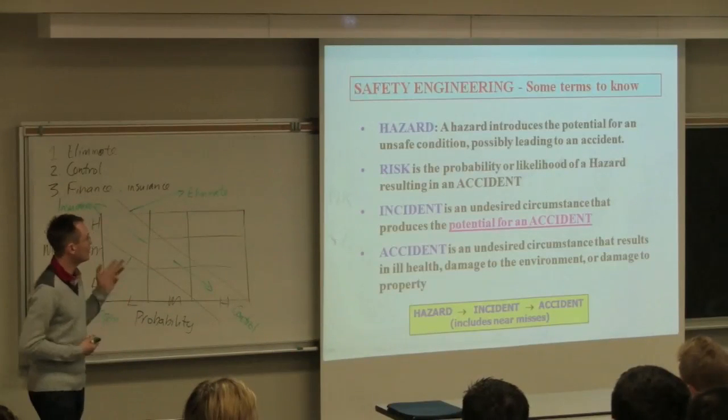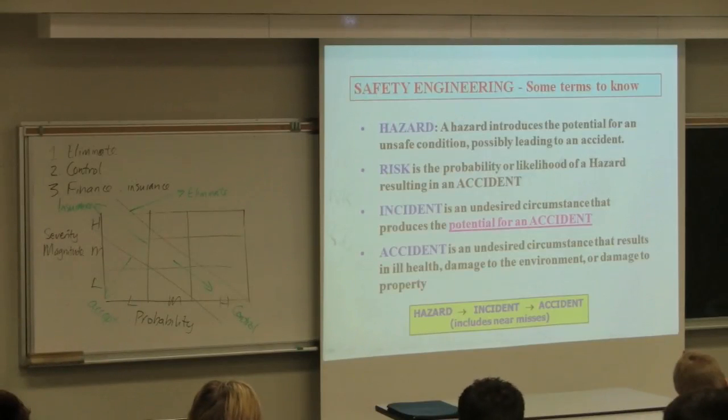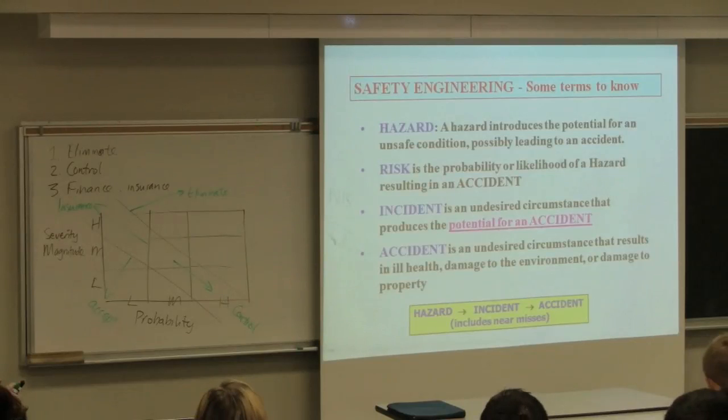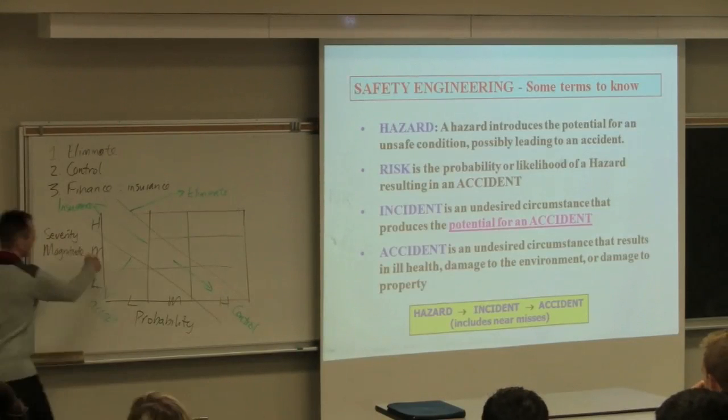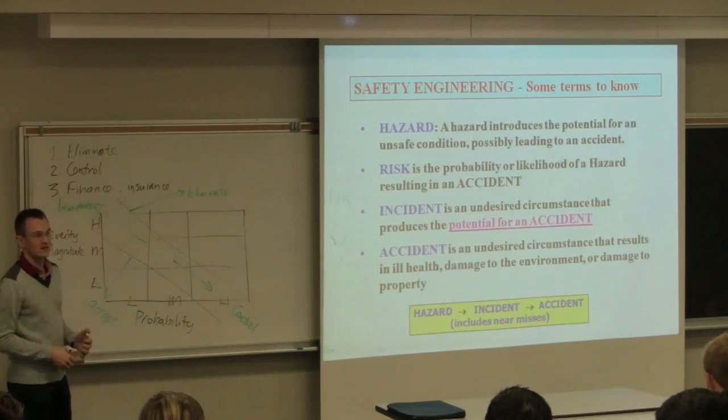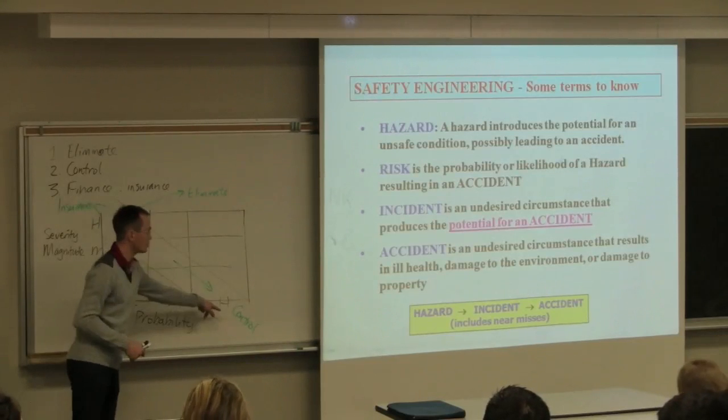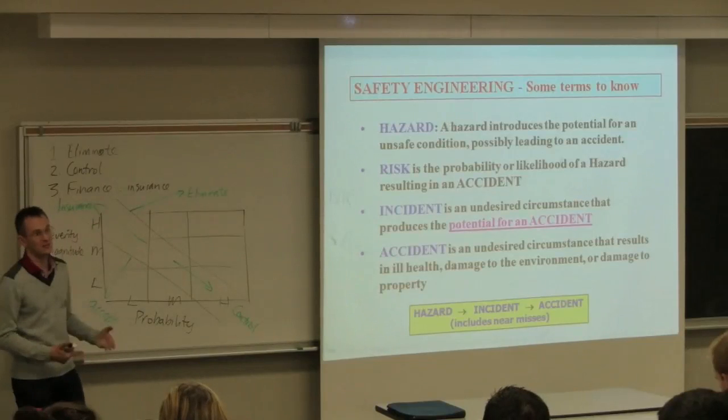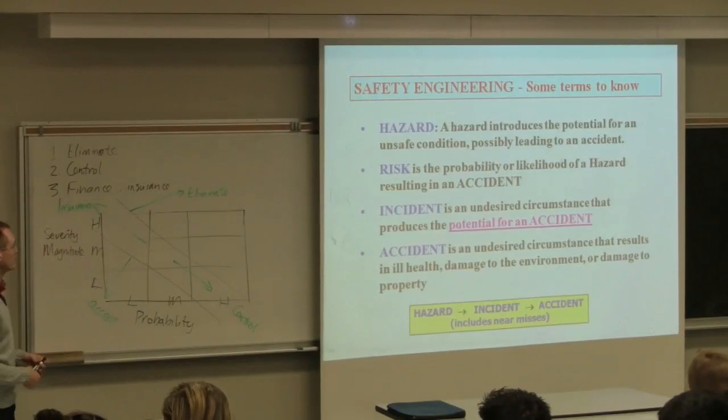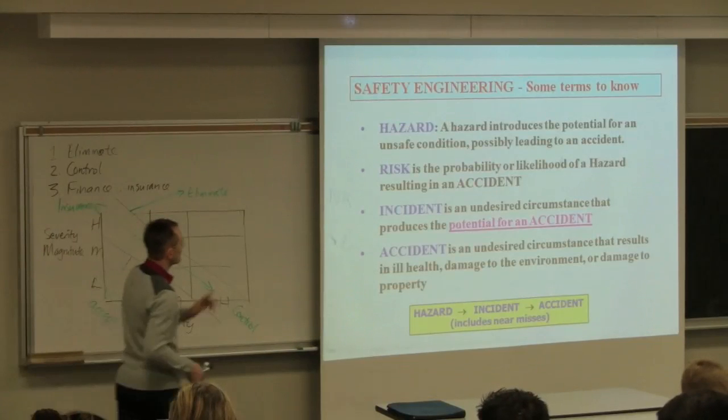So it's important to understand this because when we get to hazard and operability studies, every time we identify a major hazard, we also look at the consequences of it. And then once we've identified the consequences, we develop an action to mitigate the consequence. That level of action we take is going to be directly proportional to the risk of that hazard occurring.